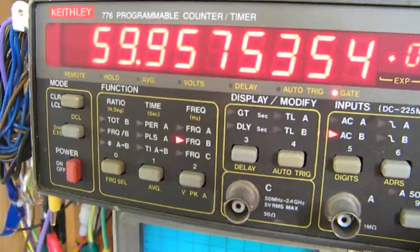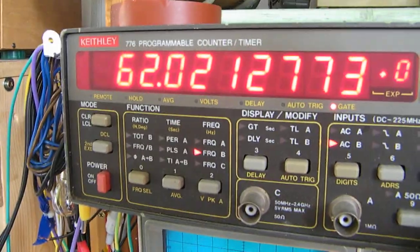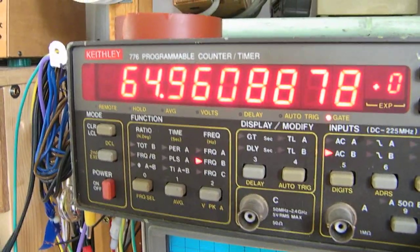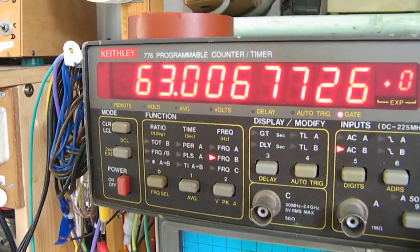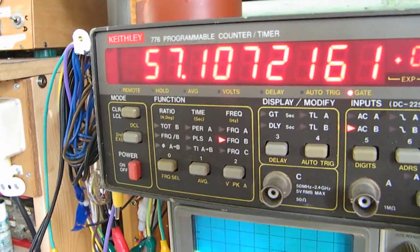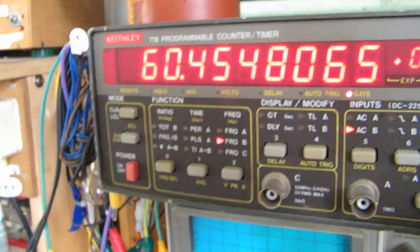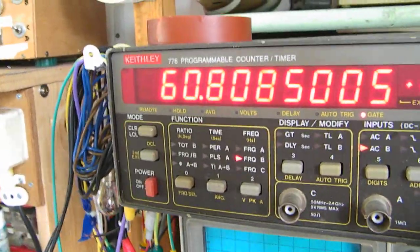When you turn the potentiometer somewhat, the 1K in the phase shifting network, you can tune in a little bit and fine tune it to 60 hertz approximately.